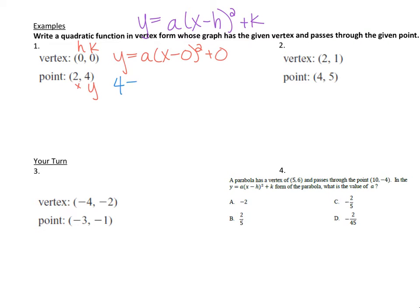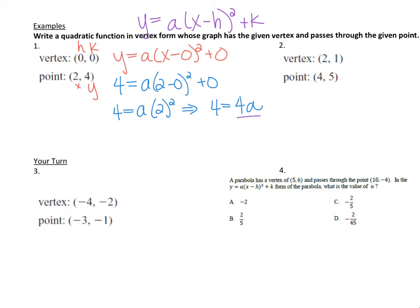When I fill that out for every x and y, I get 4 equals a times x. I know x is 2, so x minus 0 squared plus 0. If I simplify that, I get 4 equals a times 2 squared plus 0, so 4 equals 4a. To get a alone, I divide each side by 4, and I get 1 equals a.